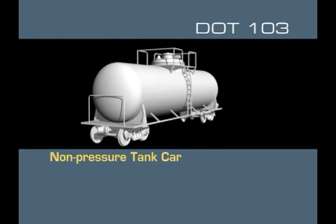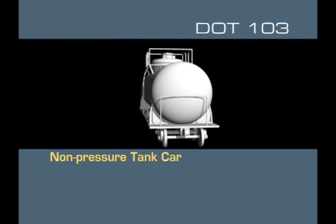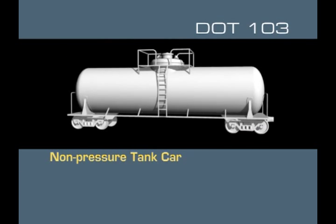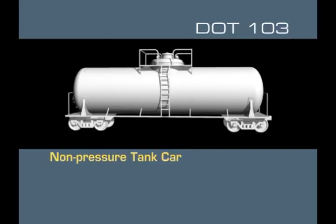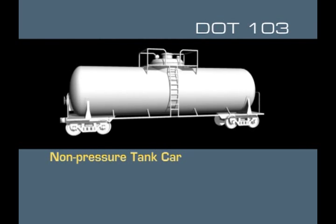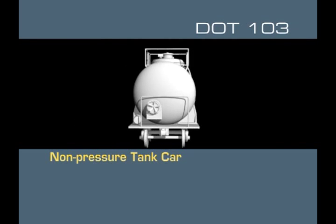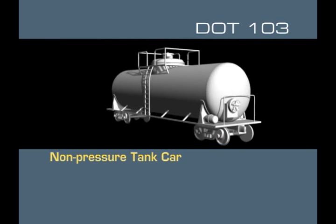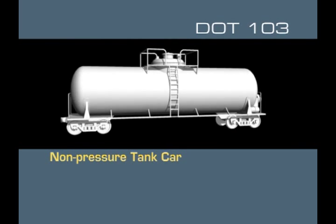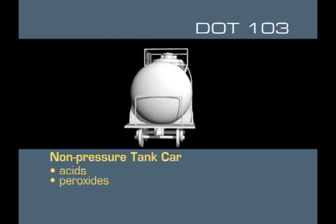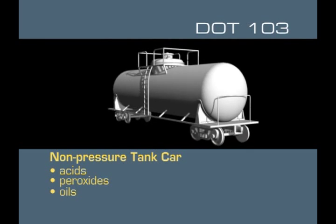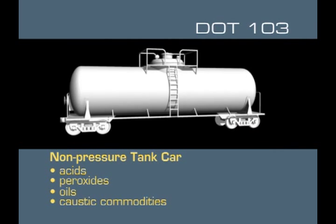Non-pressure tank cars are the next category of rail containers you are required to recognize. The DOT-103 has a cylinder shape with rounded ends and a circular silhouette. It usually has a valve on top with an access walkway. DOT-103s carry acids, peroxides, oils, and caustic commodities.